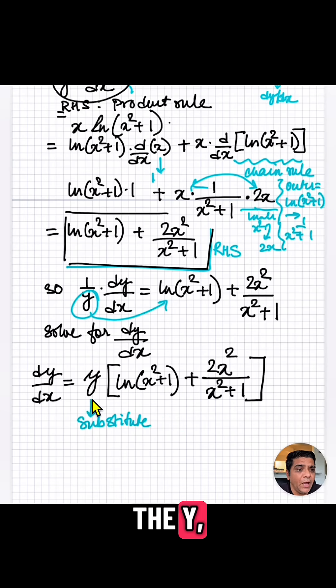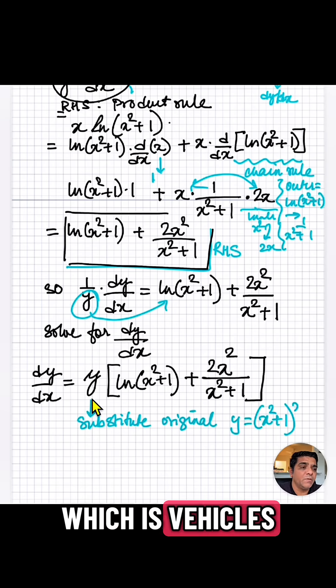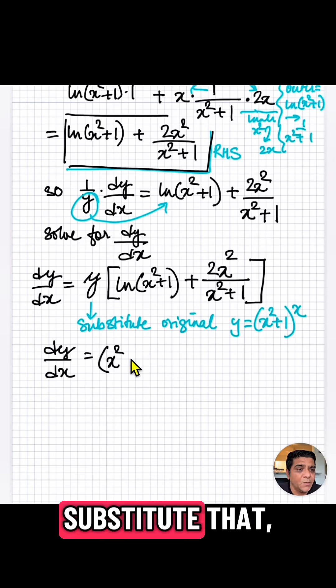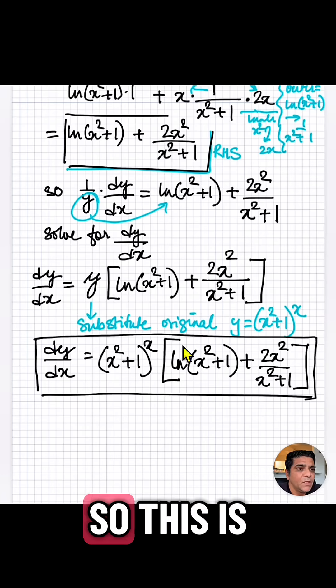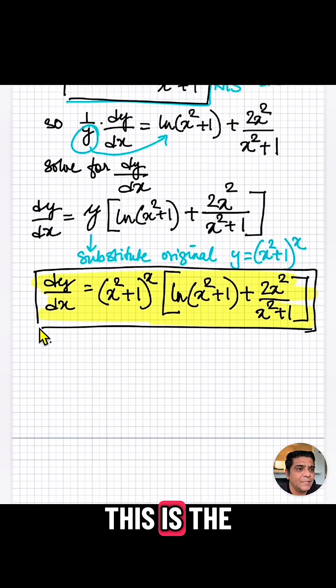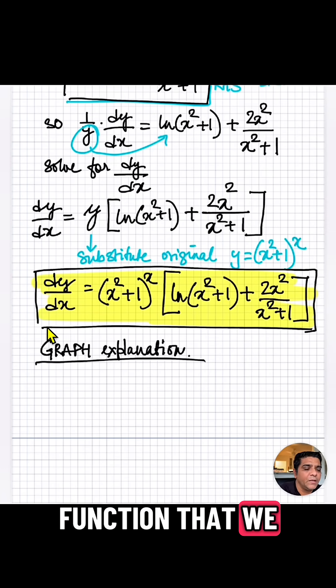Now let's go ahead and substitute the y, which is the original function, which is y equals x squared plus 1 to the power of x. So when we substitute that, we have x squared plus 1 to the power of x and everything inside right here that we just spoke of. So this is our final dy dx. This is the derivative of that function that we began with.